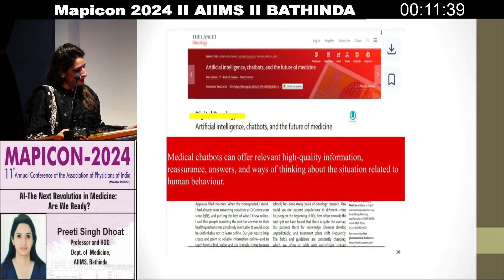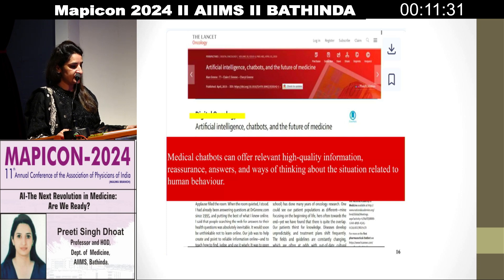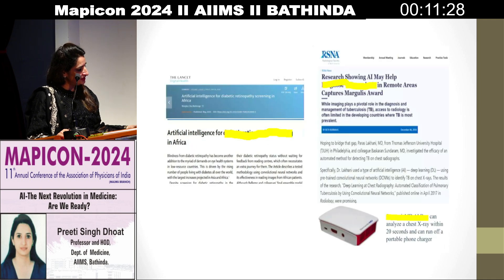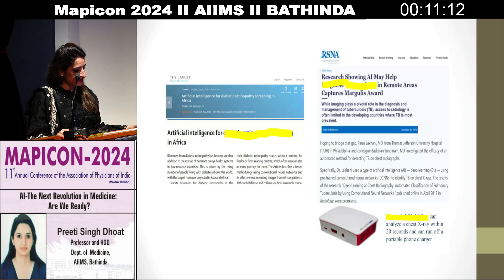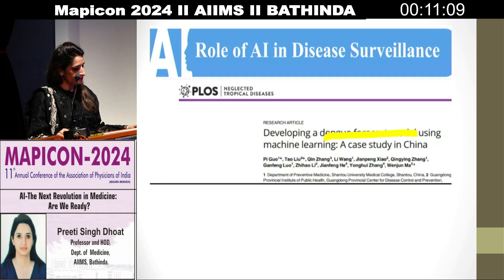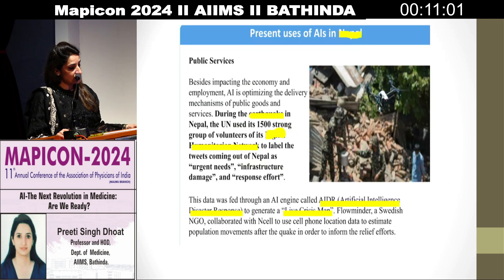Medical chatbots can offer relevant high-quality information, reassurance, answers, and ways of thinking about situations related to human behavior. Research on artificial intelligence for diabetic retinopathy screening in Africa shows AI may help in remote areas — it has captured the Margulis Award. It can analyze a chest X-ray within 20 seconds and run off a portable phone charger. A dengue prediction model using machine learning was also developed in a case study conducted in China.